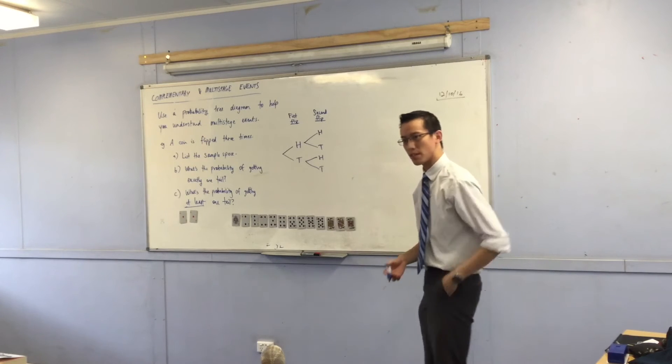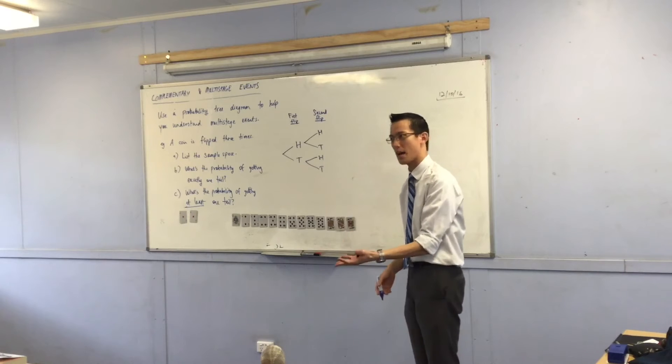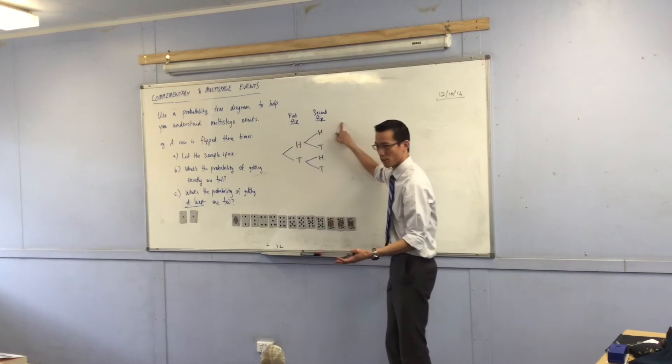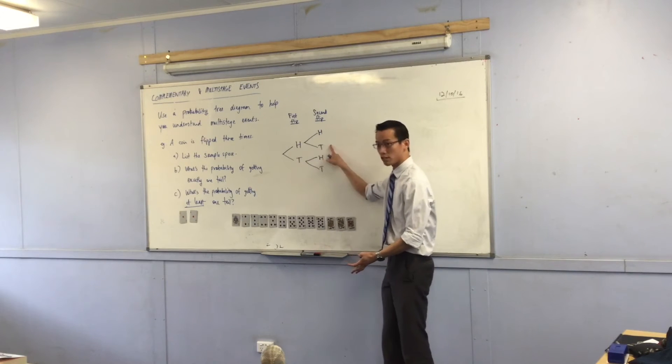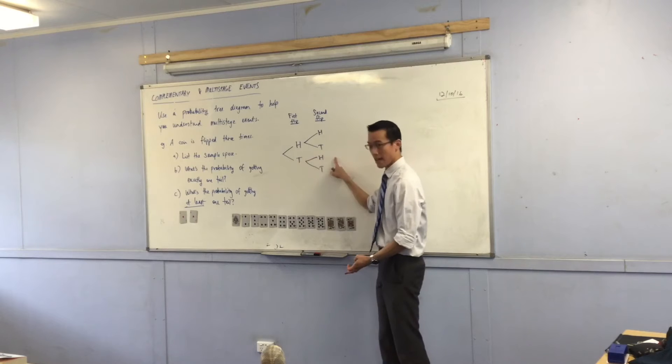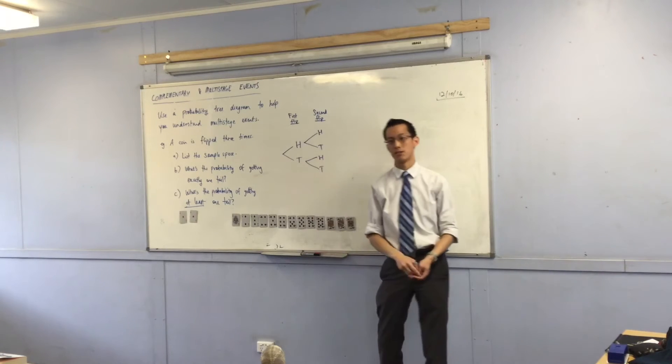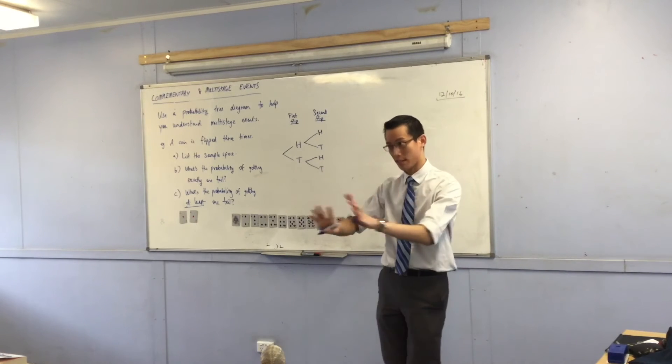So after two flips, there are four possible things that could have happened. I could have gotten two heads in a row, I could have gotten a head tail, I could have gotten a tail and then a head, or both of them could have been tails. There are four distinct different outcomes.